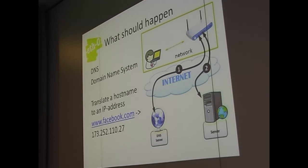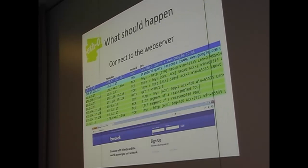Next step: DNS. You connect to the DNS server and resolve www.facebook.com to an IP address, because your laptop doesn't understand the URL itself — it needs an IP address. There's a Wireshark trace showing a DNS query, a query response, and then you're able to initiate a session. If everything goes well, you get your Facebook. Again — what could possibly go wrong?